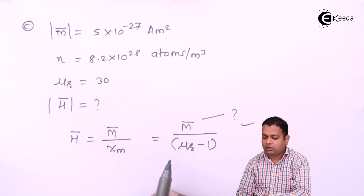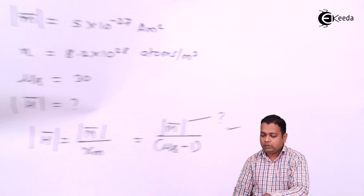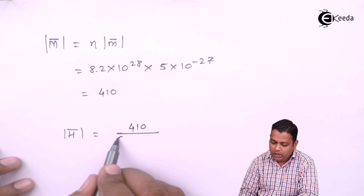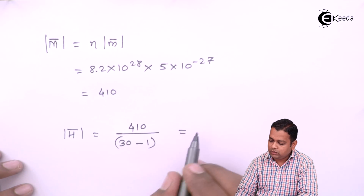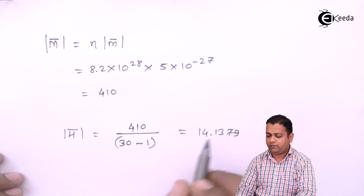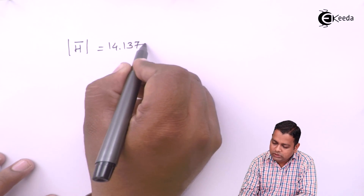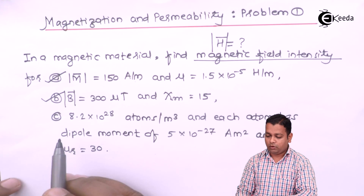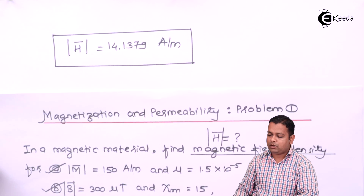So the magnitude of H bar is 14.1379 ampere per meter. Getting back to the problem statement: we were provided concentration, dipole moment, and relative permeability, and with these given values we determined magnetic field intensity with this particular value. This is the required result for part C.